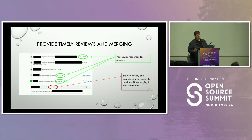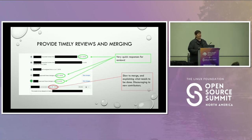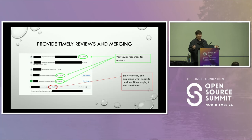Speaking of timely reviews — this example shows both good and bad responses to a PR. We had really quick responses with two approvals in less than two days of submission. But the PR did not get merged — it needed to be rebased. If you need to call the contributor back to rebase, maybe they've moved on because that PR never got merged. By being slow to merge or not explaining exactly what needs to be done, we discourage new contributors from becoming the long-term contributors we're looking for.